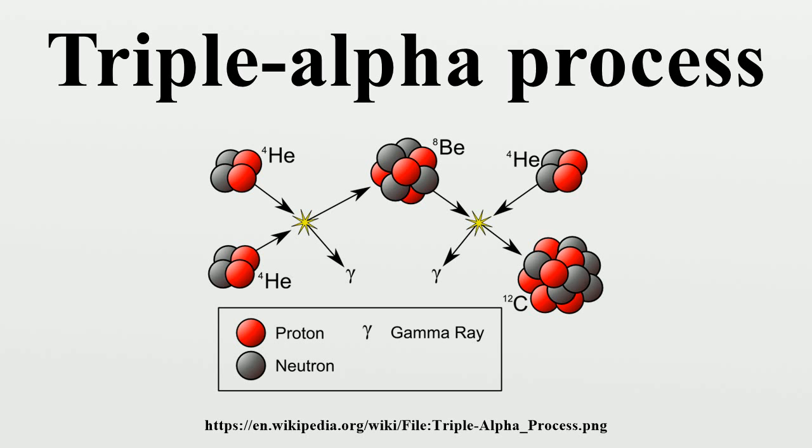By 1952, Fowler had discovered the beryllium-8 resonance, and Edwin Salpeter calculated the reaction rate taking this resonance into account.